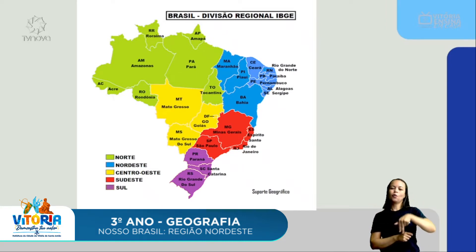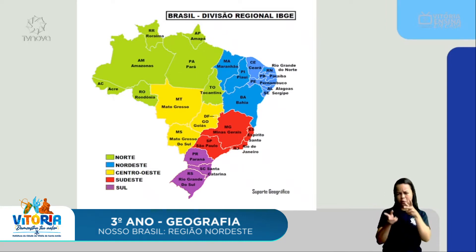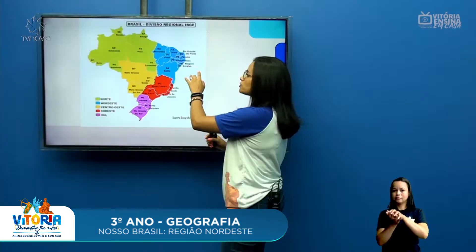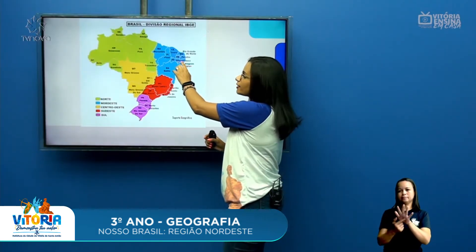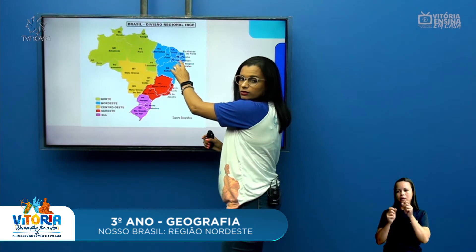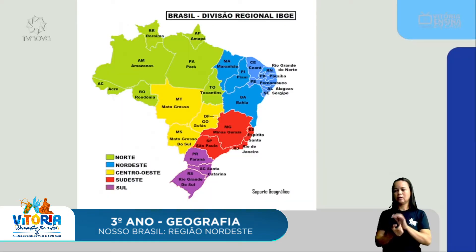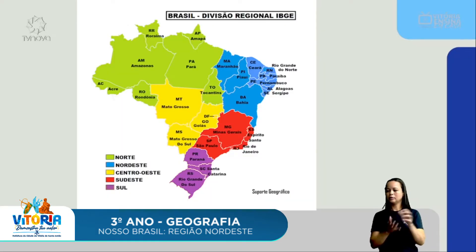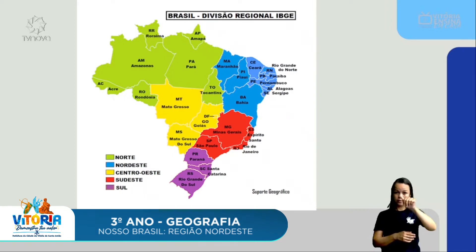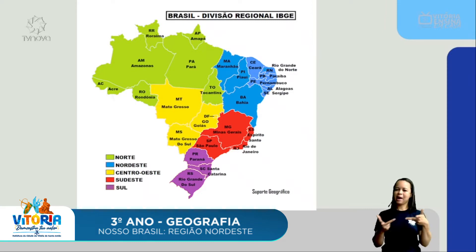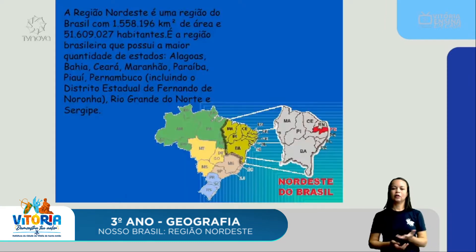Quem aí conseguiu observar Pernambuco? Desfoca aí pra eu poder apontar e depois foca novamente. Foca aí agora no mapa pra vocês verem. Tá vendo o nome aí? Pernambuco — estamos aí nesse estado maravilhoso que é o nosso Pernambuco. Vamos lá, simbora para algumas curiosidades da nossa região.